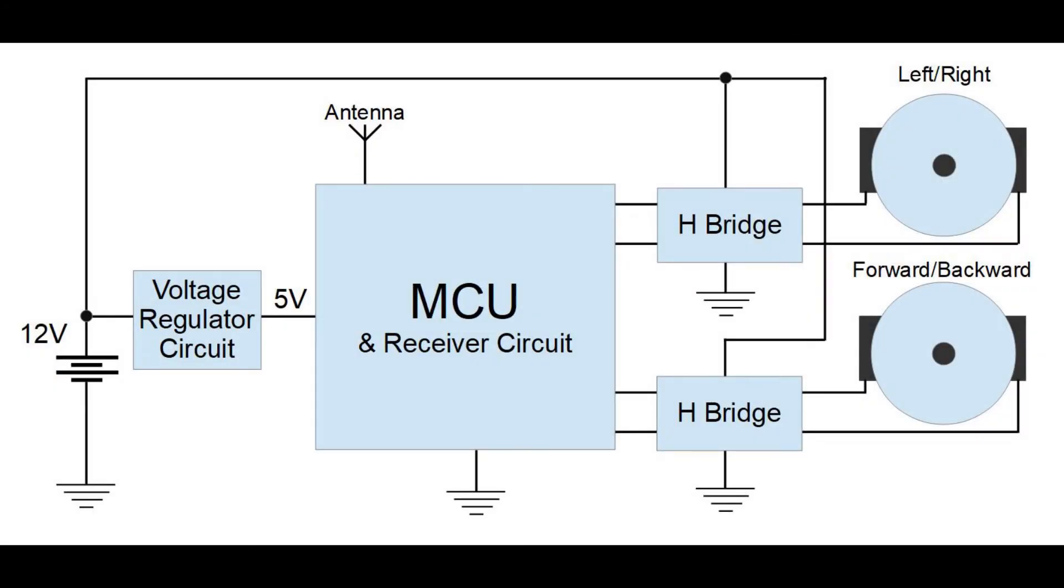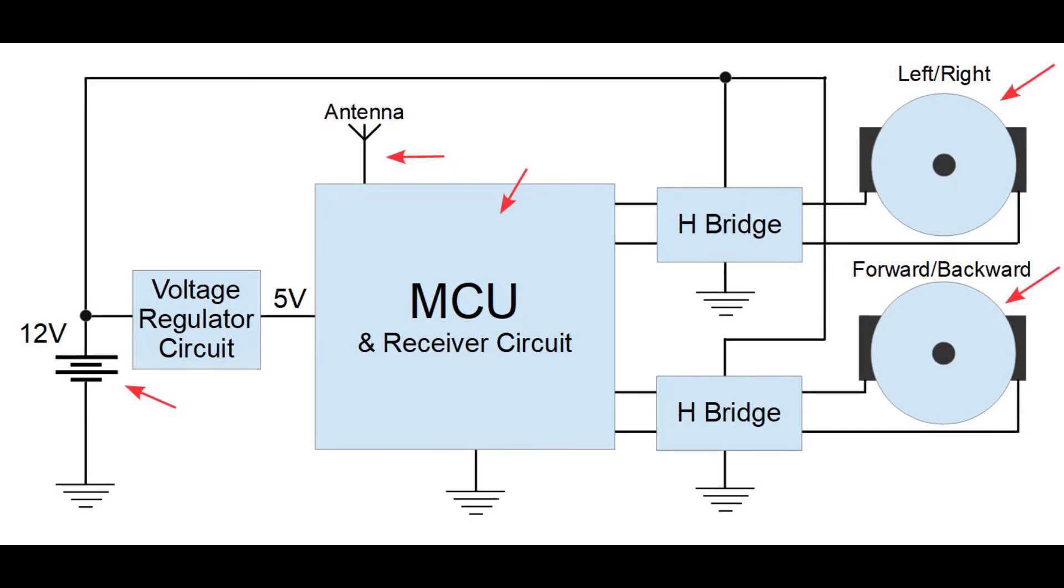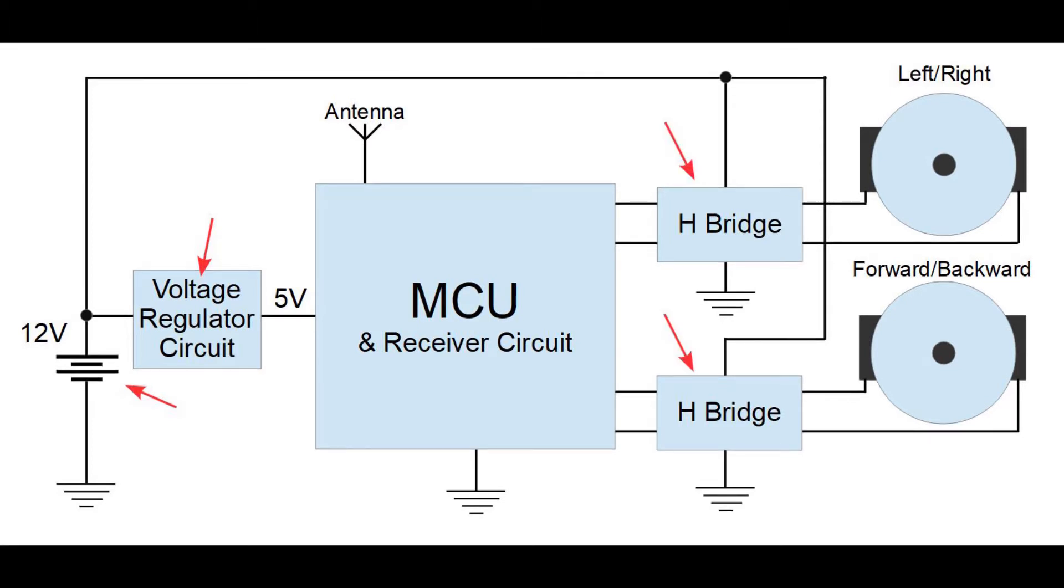Let's look at the block diagram of a more expensive remote control car that has H-bridges. As we can see, it has all the components that the cheaper version has, but in this case we have a more powerful voltage source and it also has a voltage regulator circuit before the microcontroller unit and two H-bridges between the microcontroller unit and electric motors.